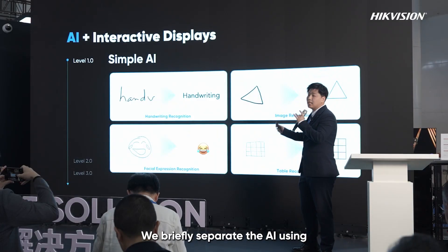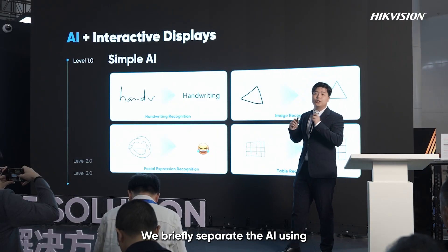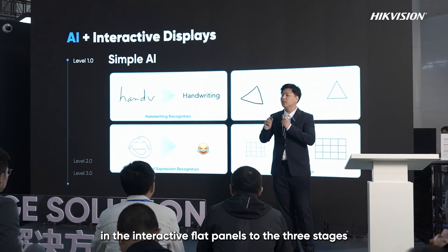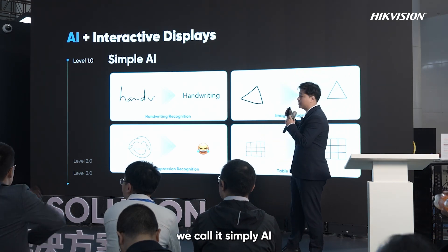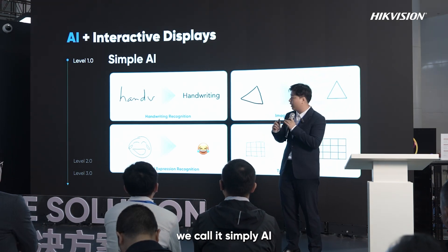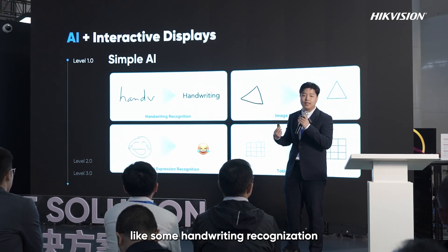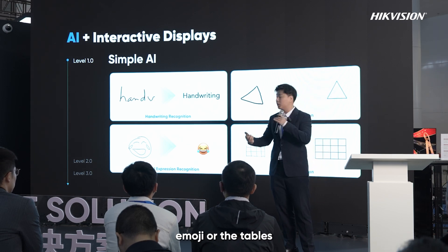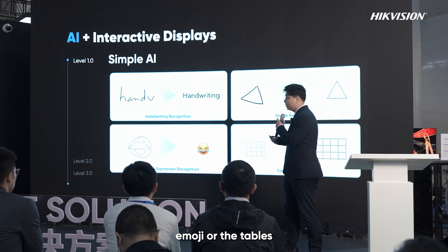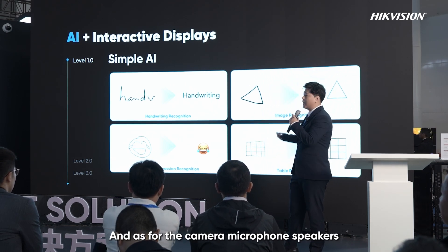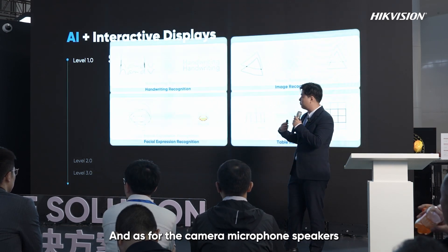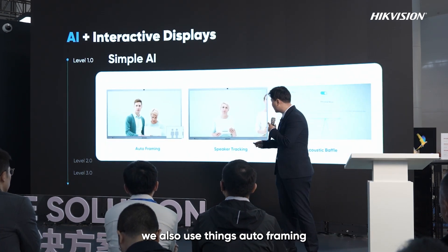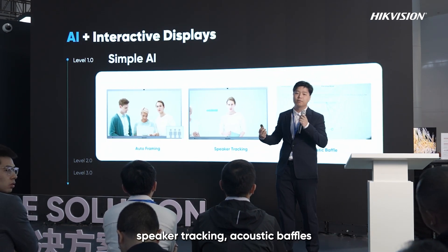We've briefly separated AI use in interactive flat panels into three stages. The first stage we call Simple AI — features like handwriting recognition, shape recognition, emoji, and tables. For the camera, microphone, and speakers, we're also using auto framing, speaker tracking, and acoustic echo cancellation.